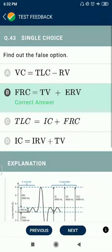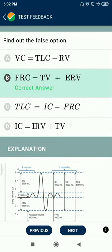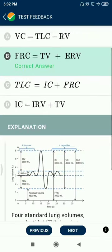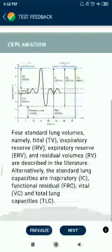Question 43: Find out the false option. VC = TLC − RV — okay. TLC = IC + FRC. IC = IRV + TV. ERV + RV is also mentioned. Identify which relation is false.